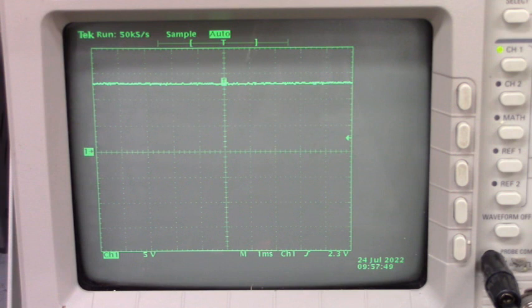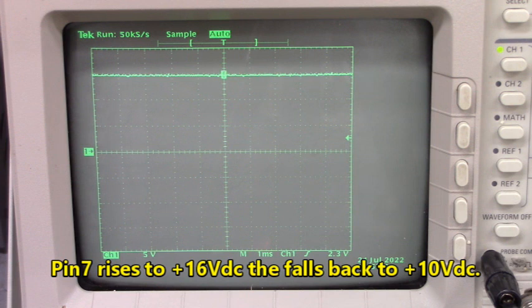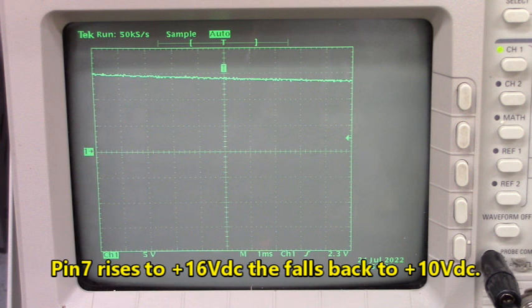First I'm going to look at pin 7, VIN to the UC3844, as we gradually increase the variac into connector X5. Now you'll see that it gets to 16 volts and then it shuts down.